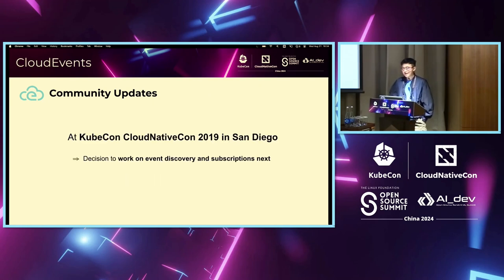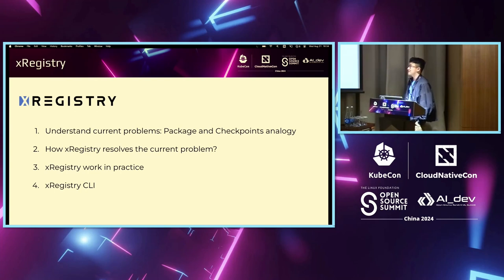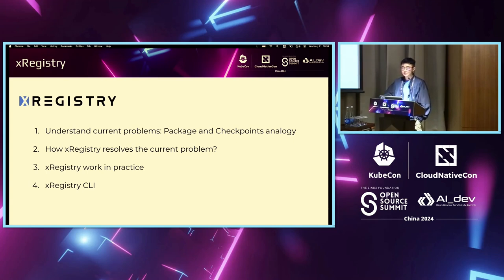For the next step regarding Cloud Events — at KubeCon San Diego in 2019, the working group decided to work on event discovery and subscription next. That comes to X-Registry, which is the next step for the Cloud Events working group. We're going to divide it into four parts: understanding the problems by analogy, seeing how X-Registry solves the problem, some work in practice with demos, and then introducing the X-Registry CLI.